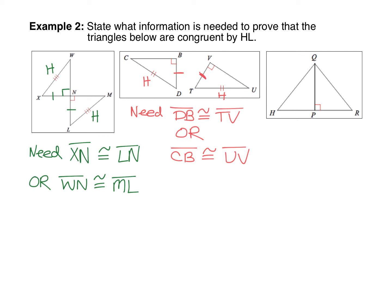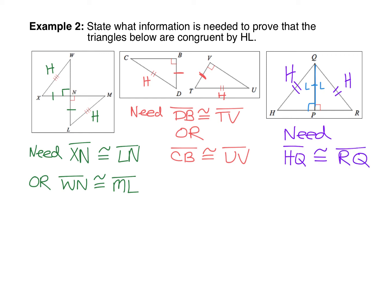For the final pair, we already have right angles because the straight line means both halves total 180 degrees — if one half is 90, the other must be 90 as well. We can also mark the overlapping shared side, which is a leg in both triangles. So what we need is the hypotenuse. There's only one possible answer here since each triangle has only one hypotenuse: HQ congruent to RQ. That gives us the H, and we already have the L from the shared side.